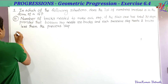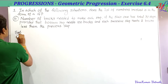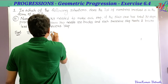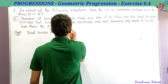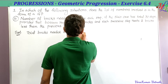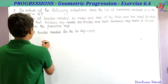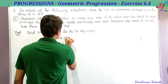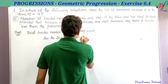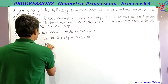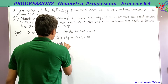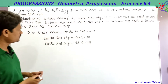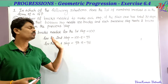Writing the solution: total bricks needed for the first step is 100; for the second step, 100 minus 2 equals 98; for the third step, 98 minus 2 equals 96. These are the bricks needed to construct the first, second, and third steps.